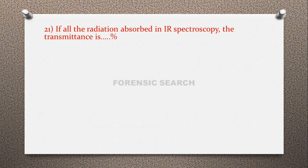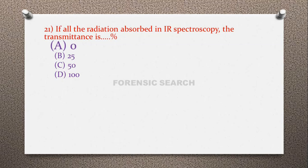Question 21: If all the radiation is absorbed in IR spectroscopy, the transmittance is what percentage? Option A: 0%, option B: 25%, option C: 50%, option D: 100%. The correct answer is 0%.